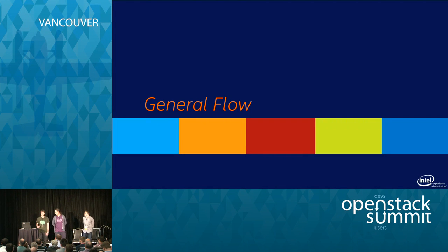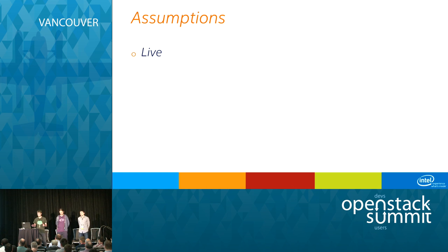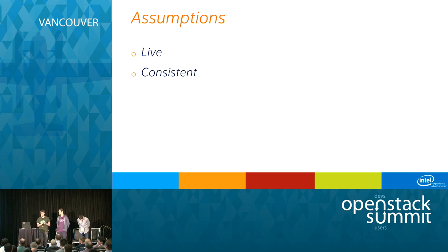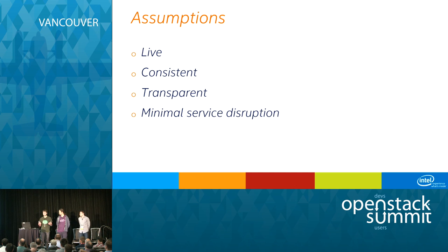Now let's talk about how live migration actually works. There are a few assumptions. Live migration is, of course, live — the VM is still running throughout the entire process. It is consistent, so the state of a VM on the source host is the same as on the destination host when the transition moment comes. It is transparent, so the VM doesn't know and doesn't need to know it is being live migrated. We need to target minimal service disruption, keeping VM downtime as low as possible.